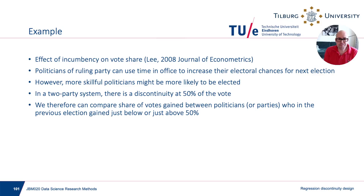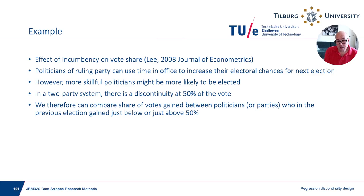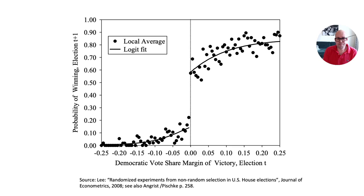Let's look at an example. I mentioned winning elections — here's an example from Lee (2008, Journal of Econometrics). Politicians of a ruling party can use time in office to increase electoral chances in the next election, but more skillful politicians are also more likely to win the first election. In a two-party system there's a discontinuity at 50% of the votes. The approach compares what happens in the second election when a politician just won versus just didn't win in the first election.